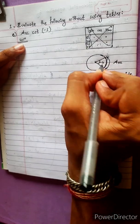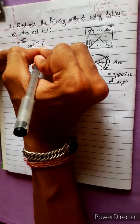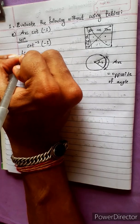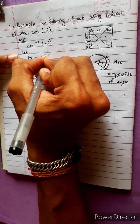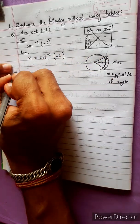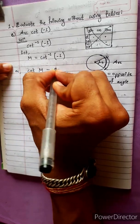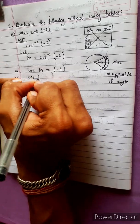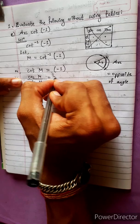Let m equal cot inverse of minus 1. So cot m equals minus 1, which means cos m divided by sin m equals minus 1.